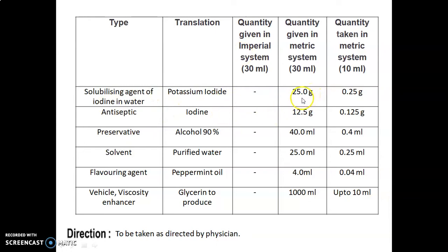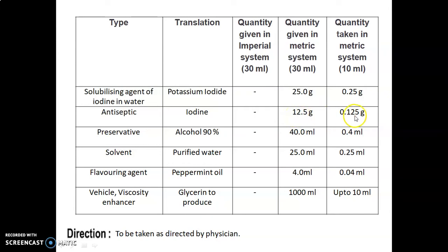Quantity given for potassium iodide is 25 g; multiplied by factor 0.01, quantity taken = 0.25 g. Second ingredient: Iodine, used as an antiseptic. Quantity given is 12.5 g; multiplied by 0.01, quantity taken = 0.125 g.